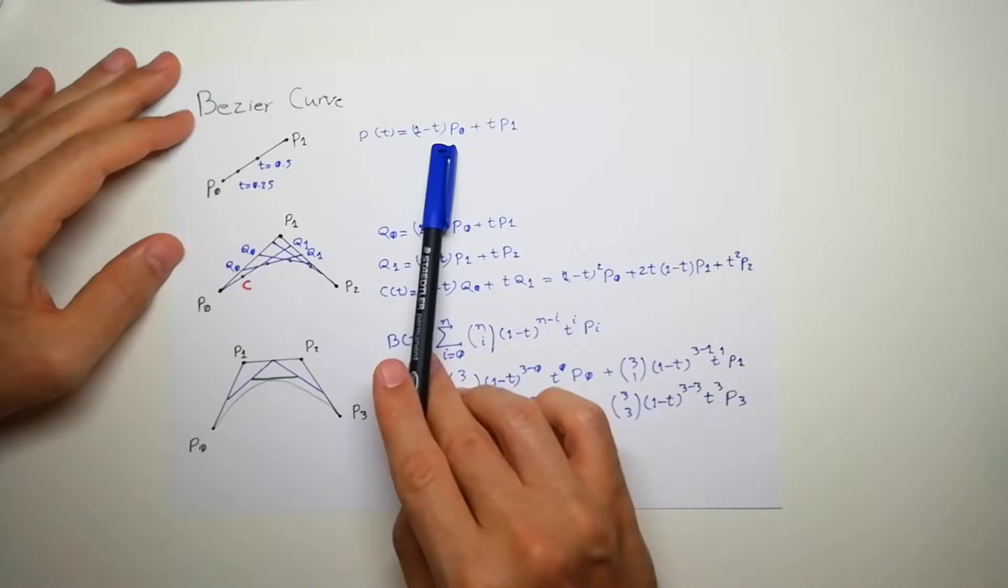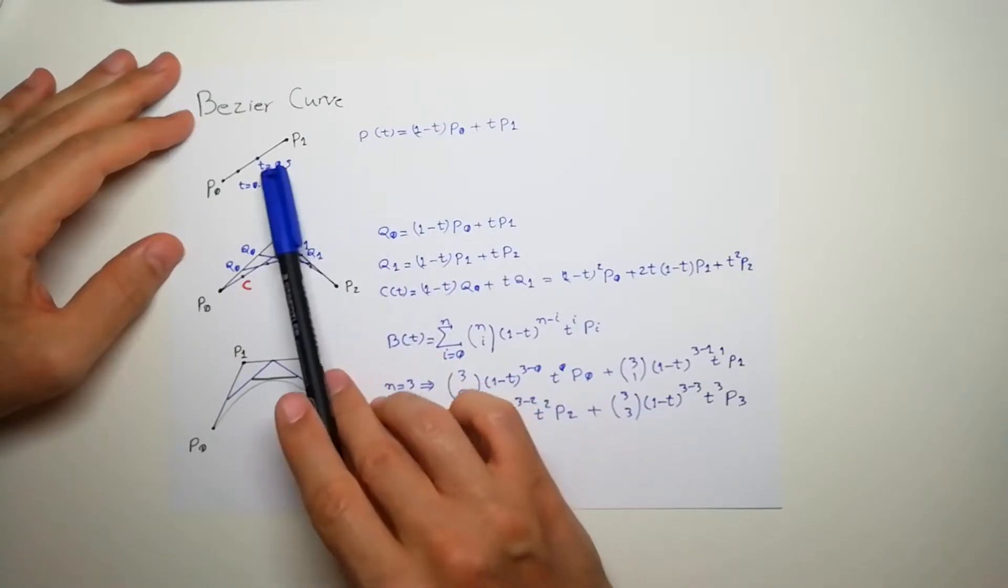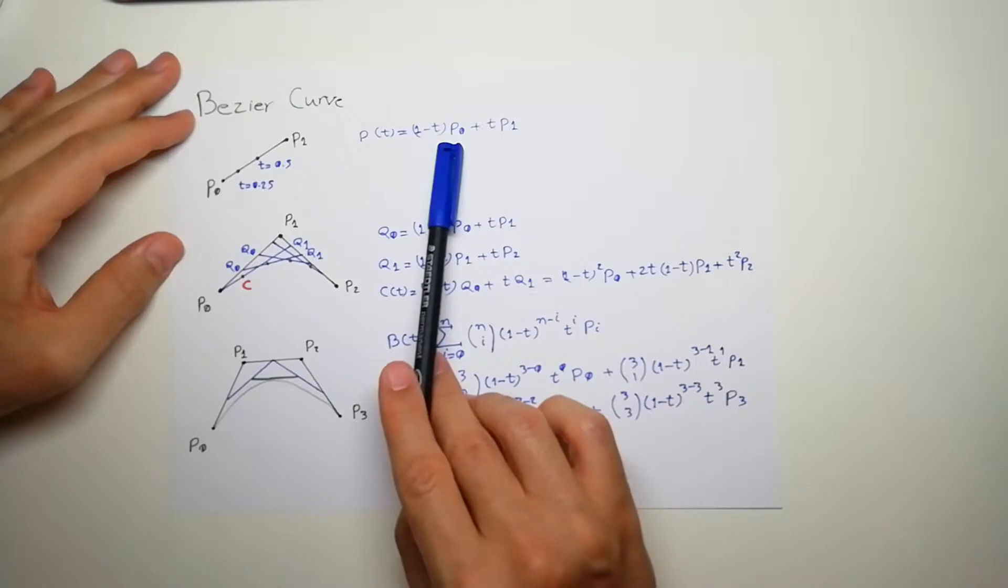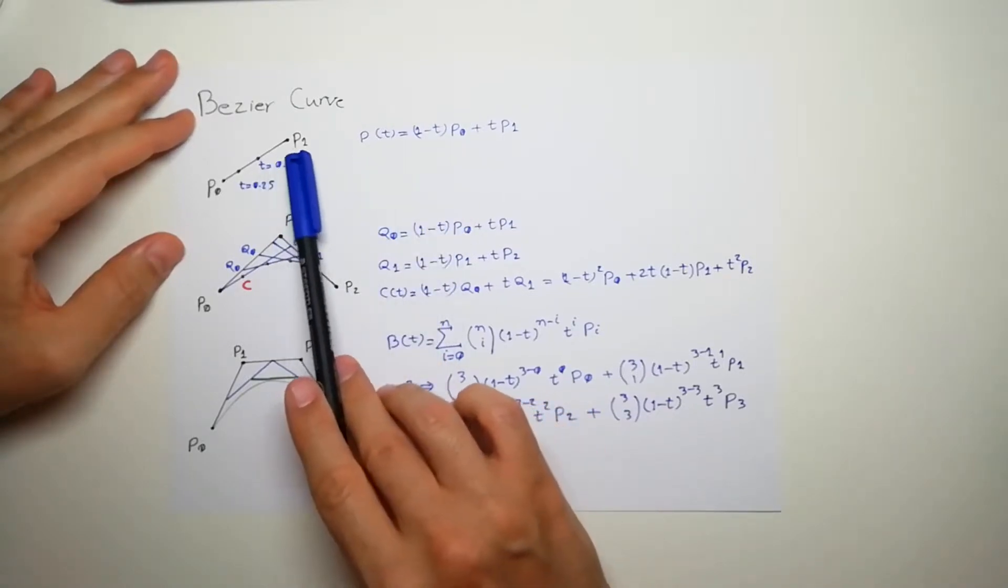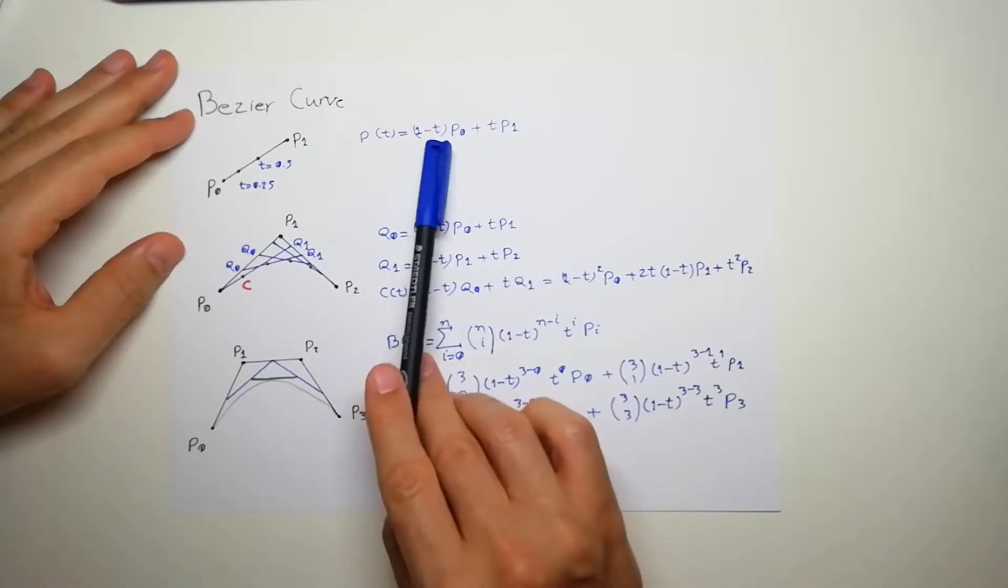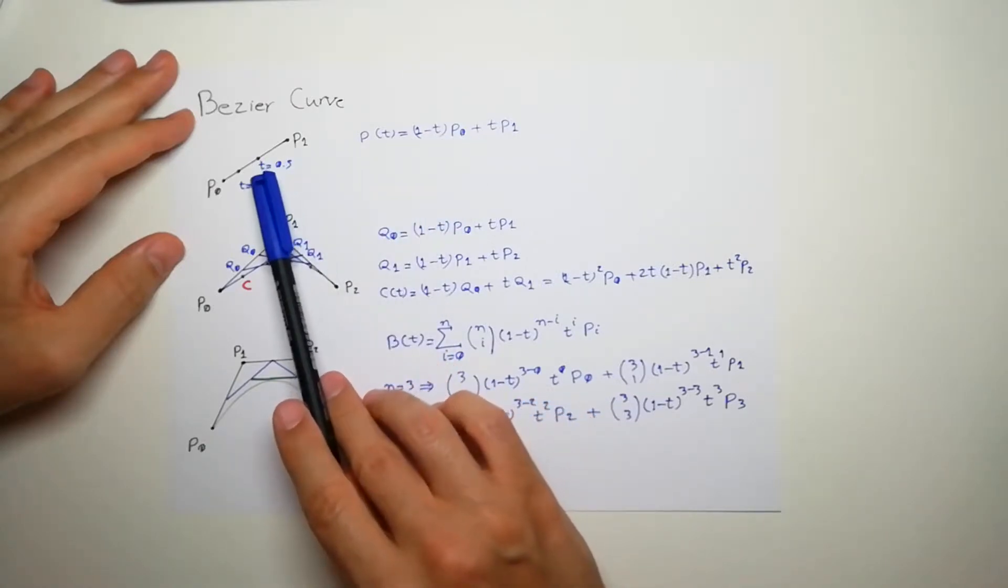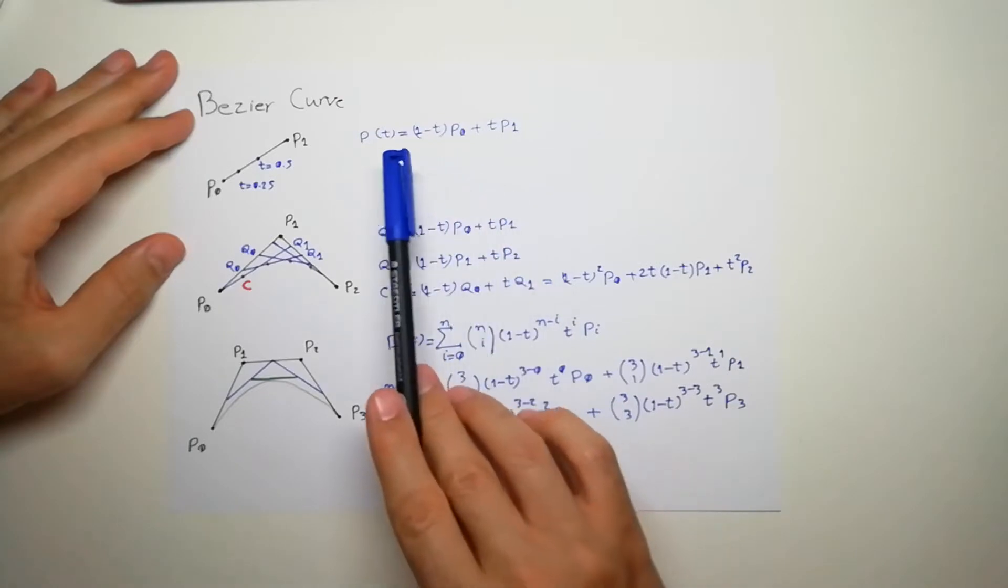If you put t equals 0.5, you will get exactly the center. If you put more weight on t, you will be shifted over to p1. And if you go to 0, you will end up around p0. So this is a weighted average between these two points.